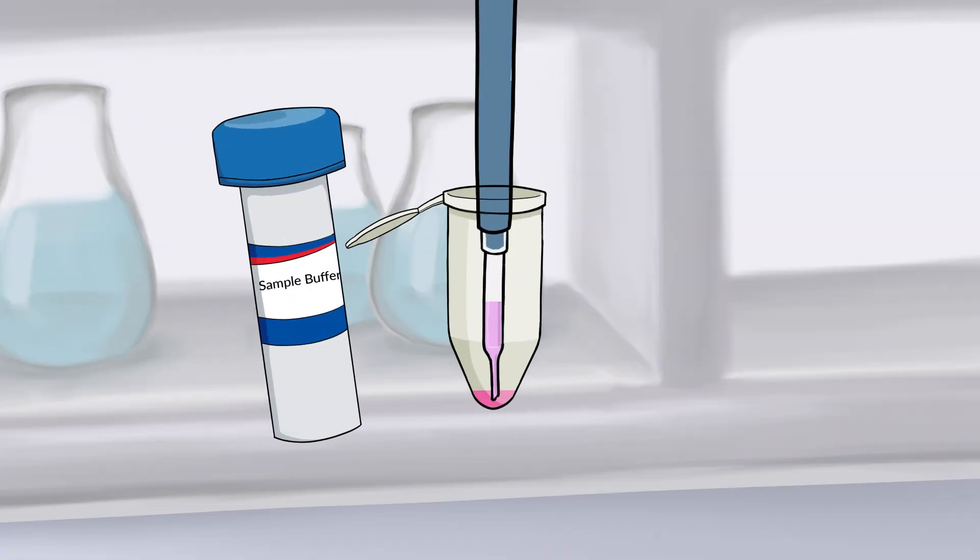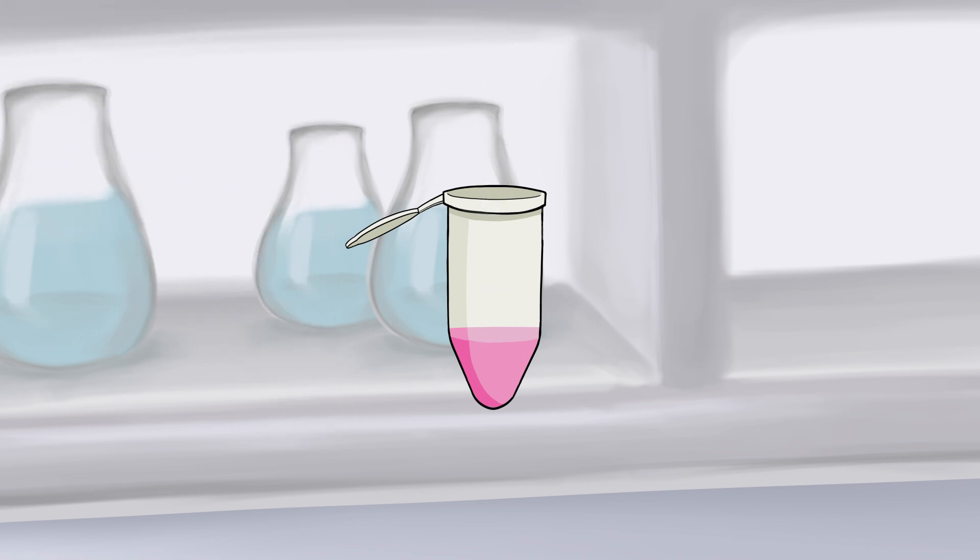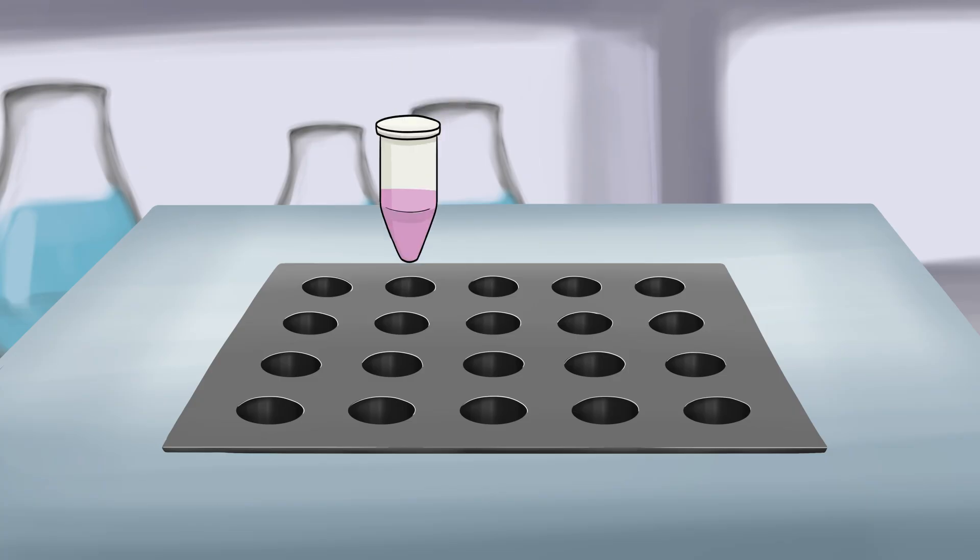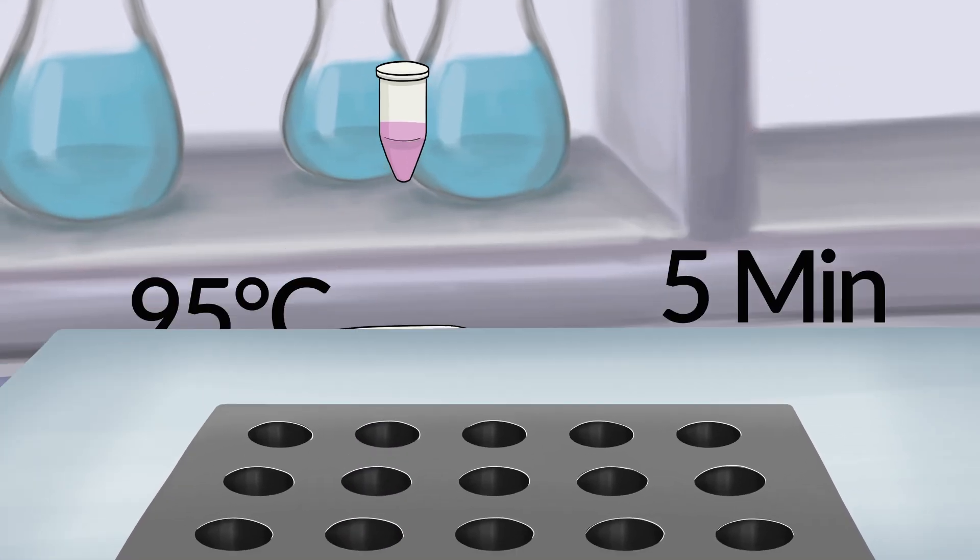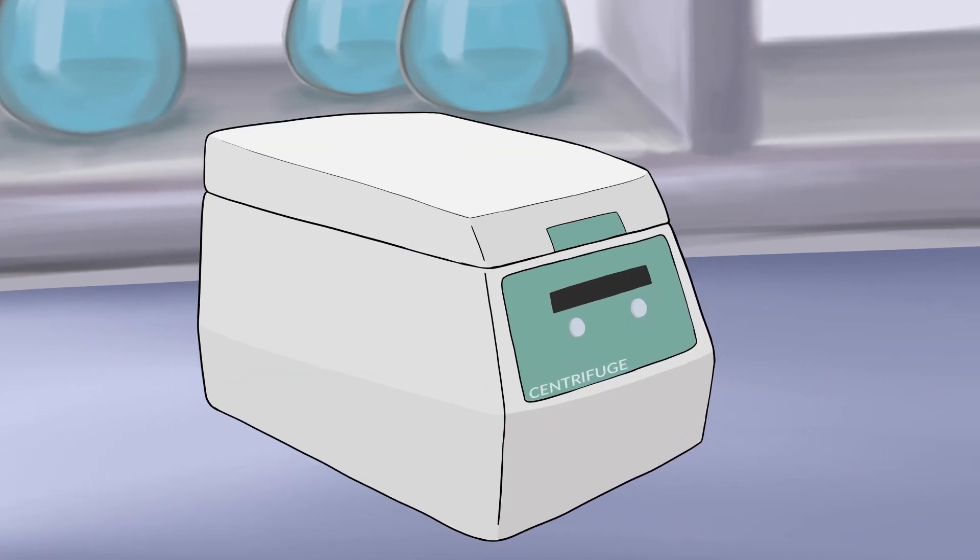Now add 100 microliters of sample buffer to the tube. Mix it well by pipetting up and down 3 times. Heat the sample at 95 degrees Celsius for 5 minutes using a heat block or a thermocycler. After heating, centrifuge the sample again at 14,000 G for 2 minutes.